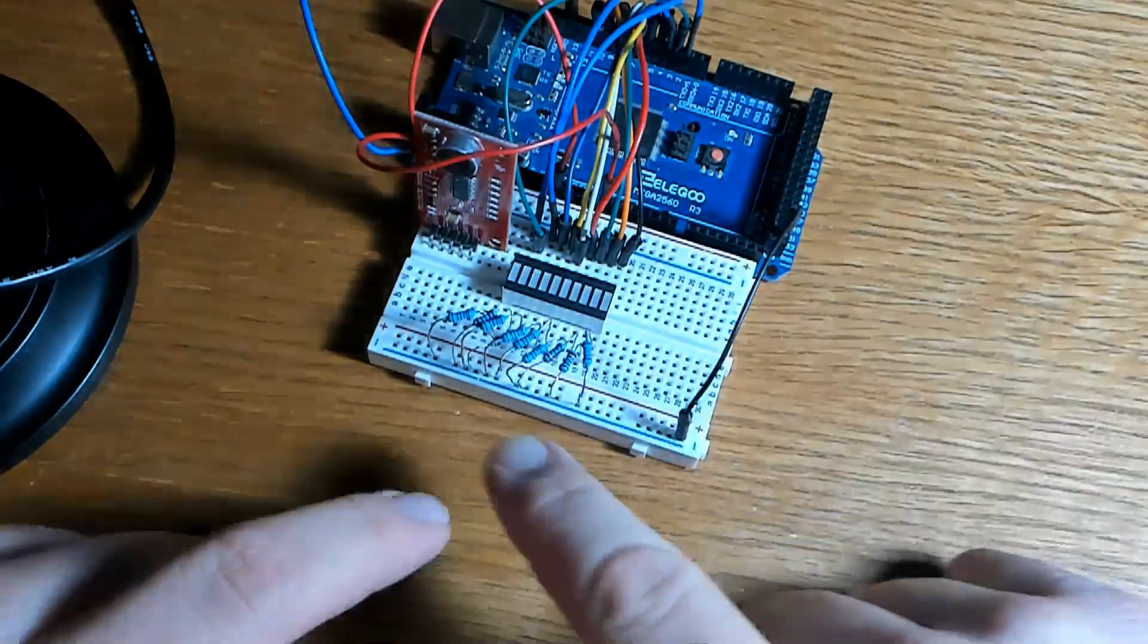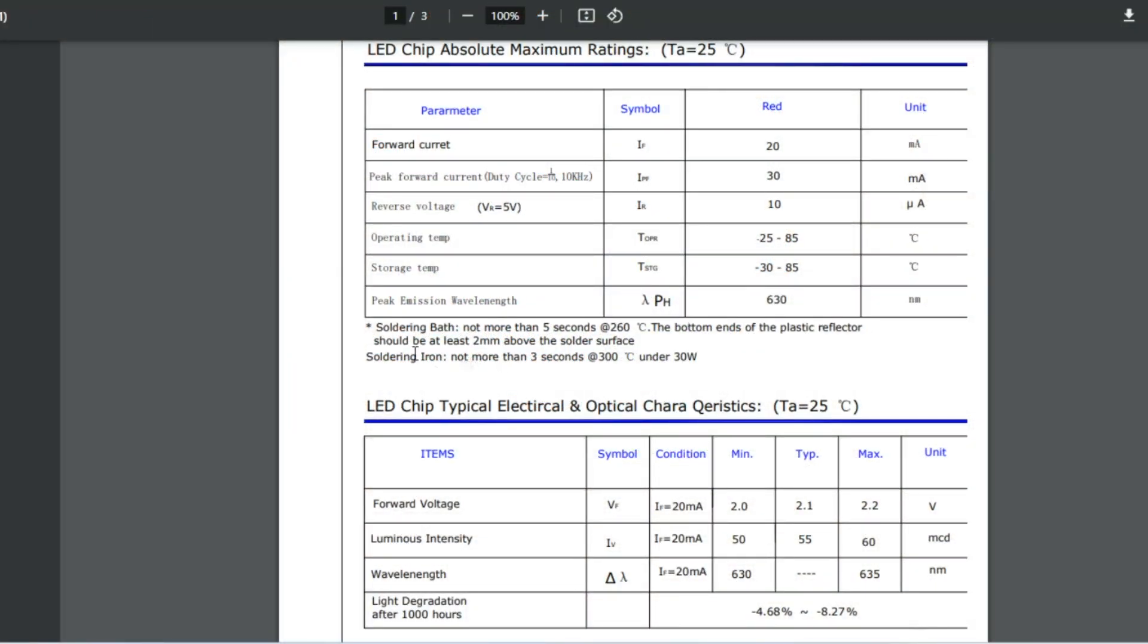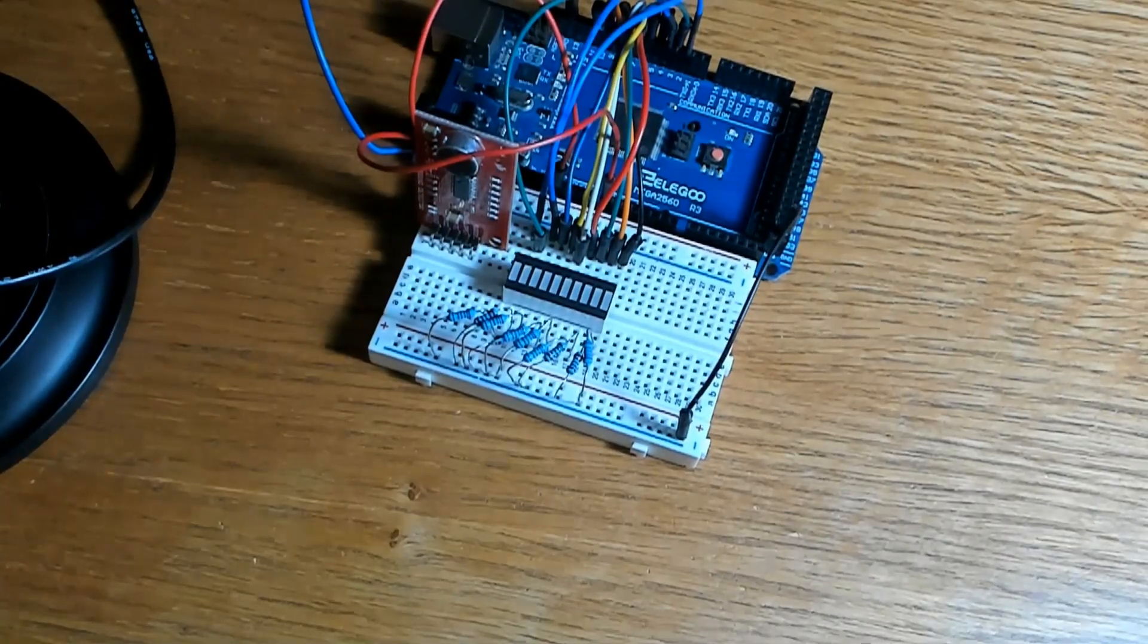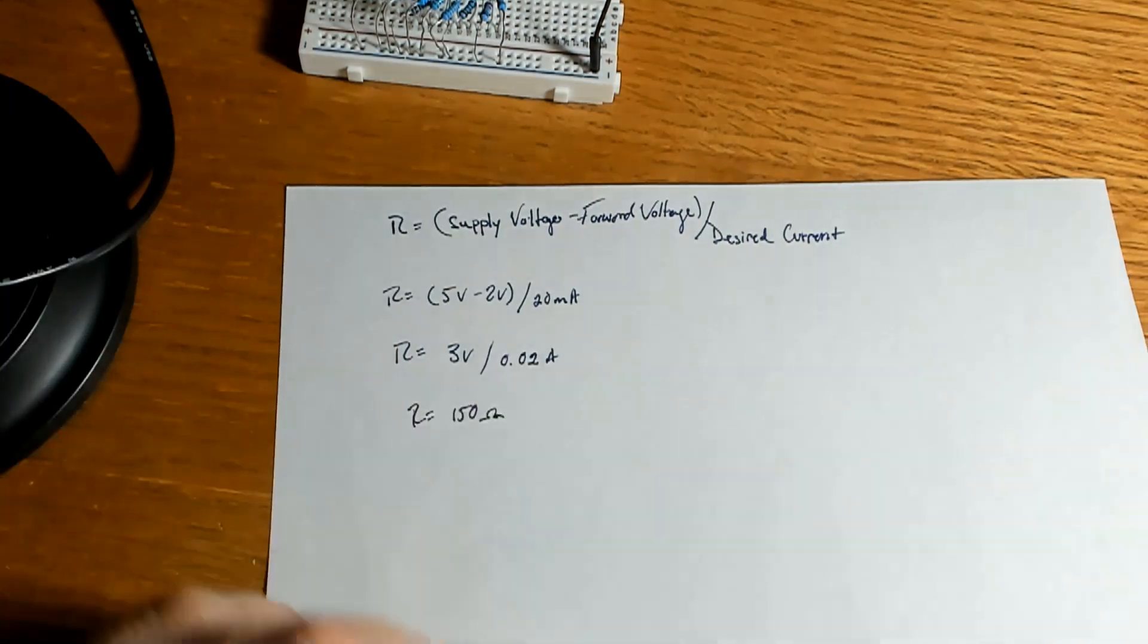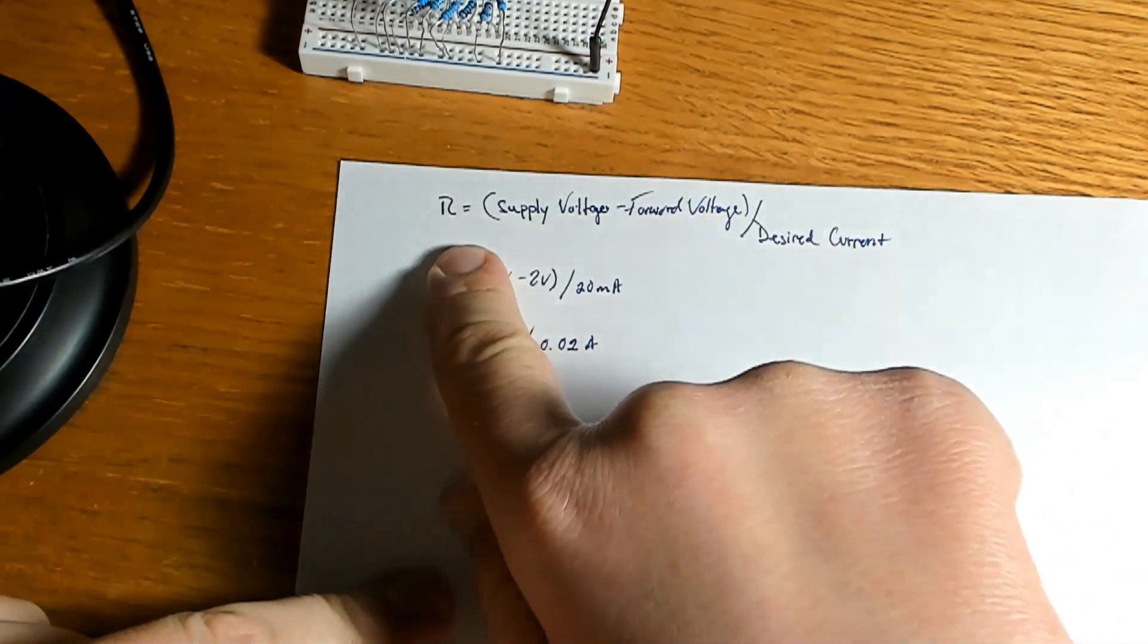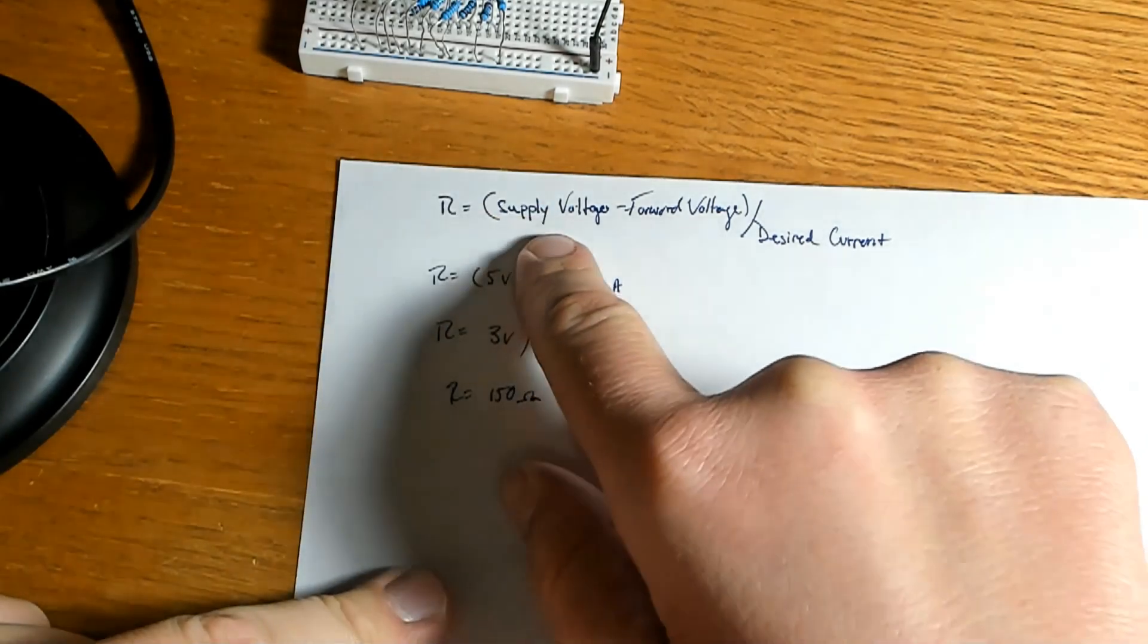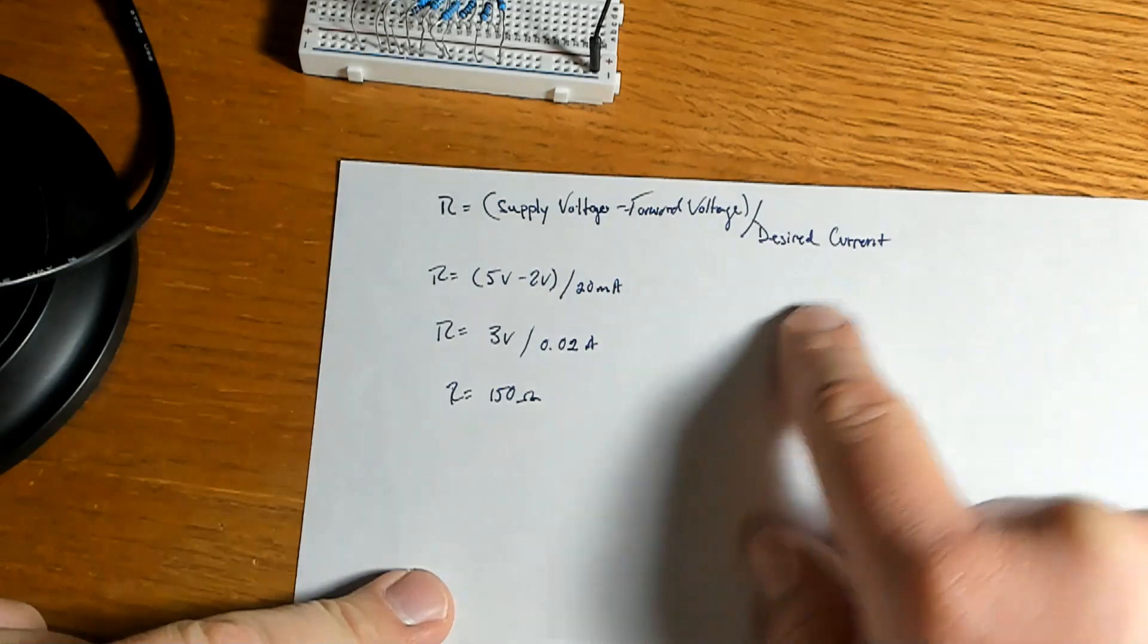Since we already know that the supply voltage for this component is 3 to 5 volts and just a moment ago we checked the datasheet for the forward current and the forward voltage, we can calculate a resistor if we really need to. But to figure out which resistor you need, we do have our little equation here. If you recall from a while back, R equals supply voltage minus forward voltage divided by desired current or forward current.